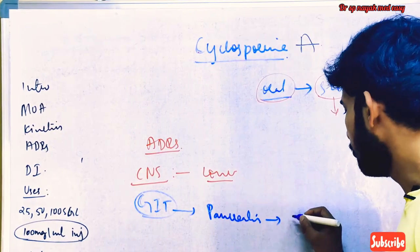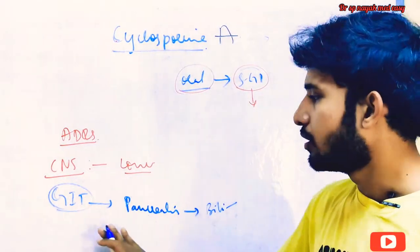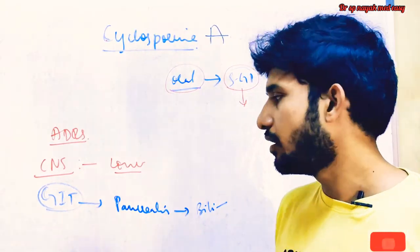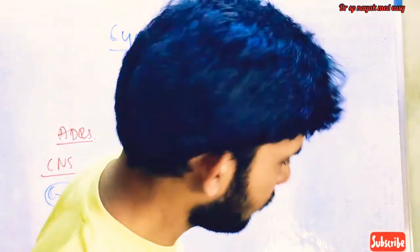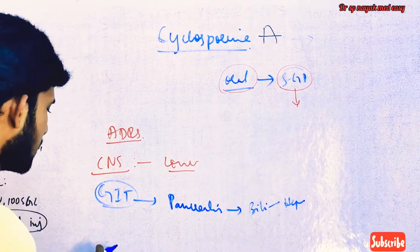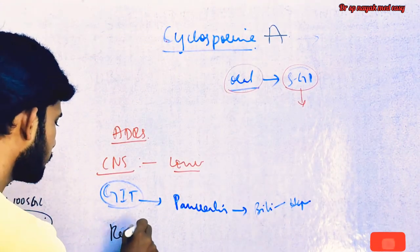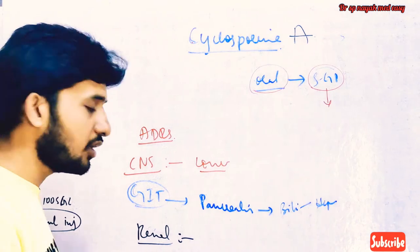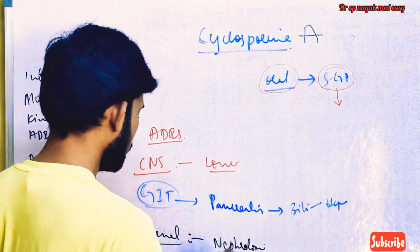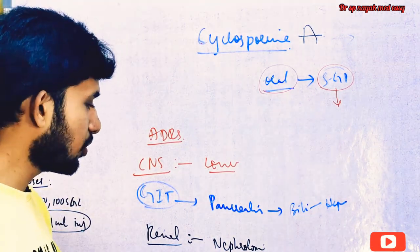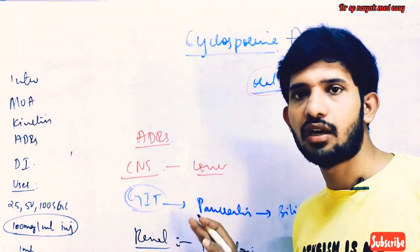ADRs associated with the GI tract include pancreatitis, which is a commonly seen ADR. Along with pancreatitis, patients will also have hyperbilirubinemia, which is another adverse reaction related to the GI and hepatic system. On the renal system, cyclosporine causes high nephrotoxicity — it is a highly nephrotoxic drug. This is very important.